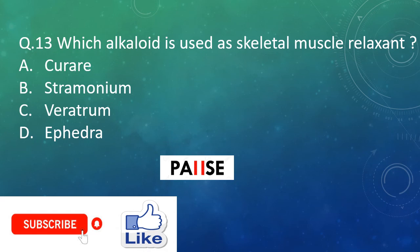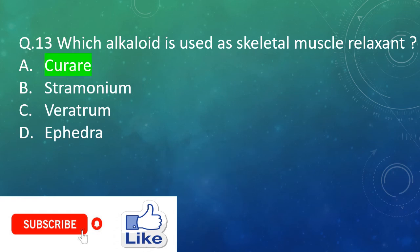Question thirteen: Which alkaloid is used as a skeletal muscle relaxant? Option A: Curare. Option B: Stramonium. Option C: Veratrum. Option D: Ephedra. And the right answer is Option A: Curare.